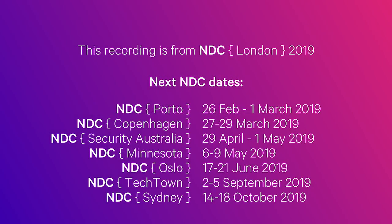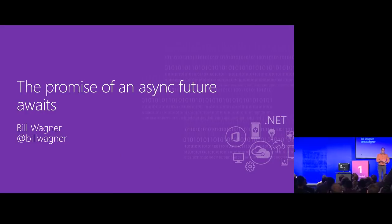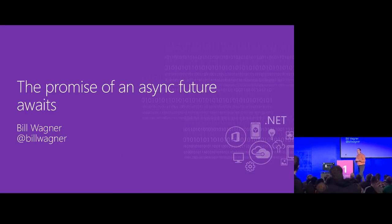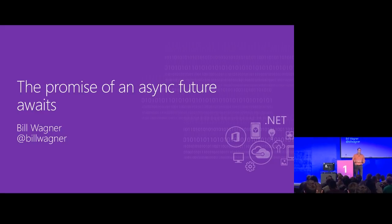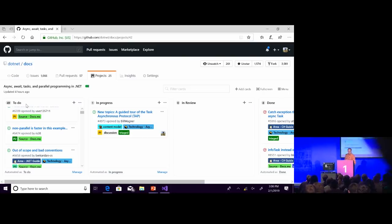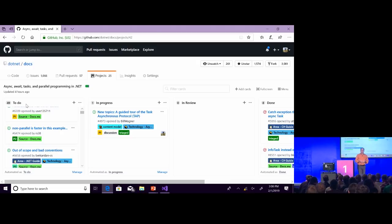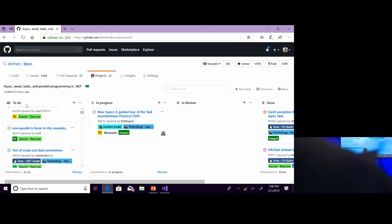Hi, good afternoon, and welcome to 'The Promise of an Async Future Awaits,' which I've gotten kudos for being the most interesting talk title. The story behind this talk is C# has had async and await, task, task of T, and this task-based asynchronous programming model since version 5. I work on the .NET Docs team, and I am primarily responsible for everything related to C#. We thought we had a bit of a problem in that we didn't think developers understood this model particularly well.